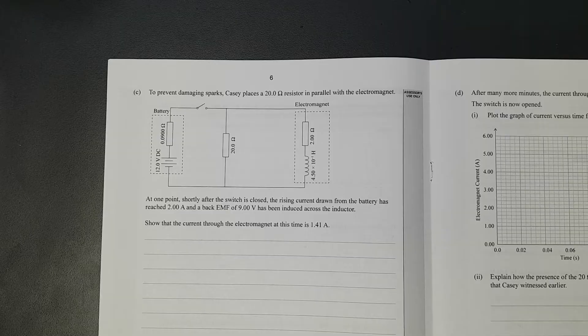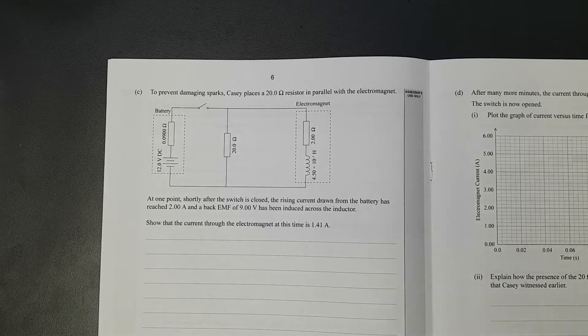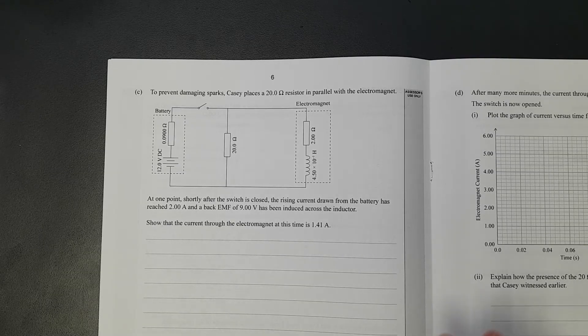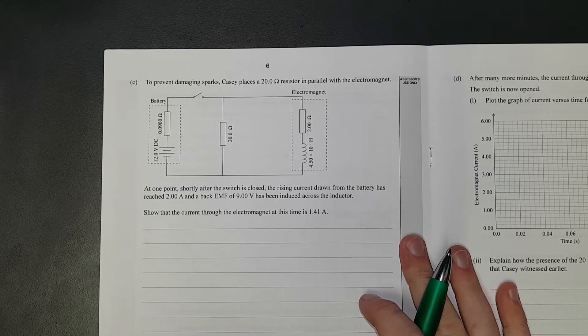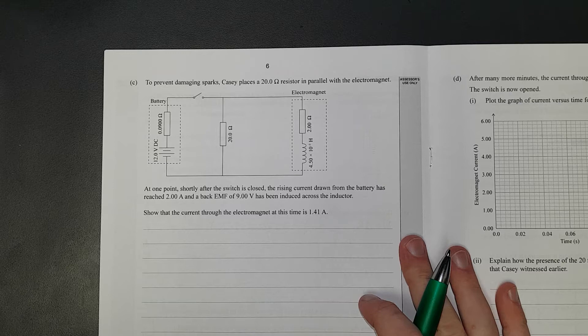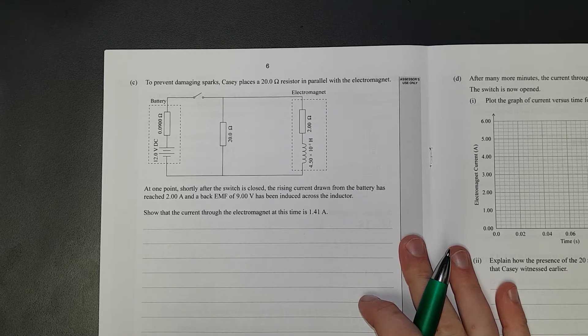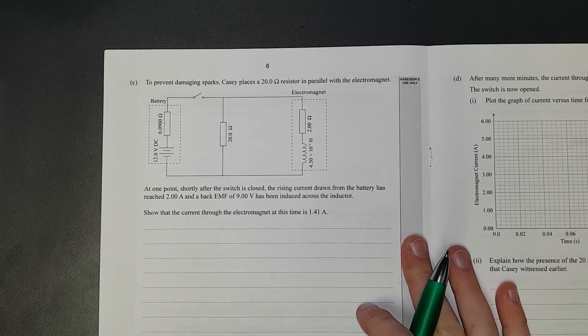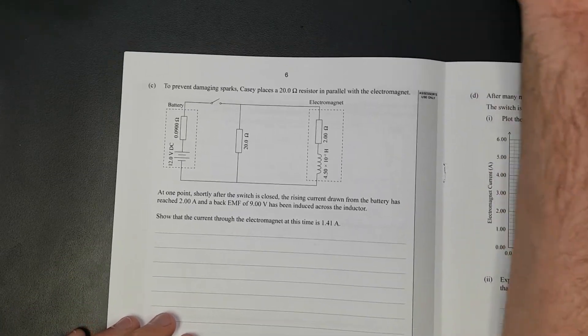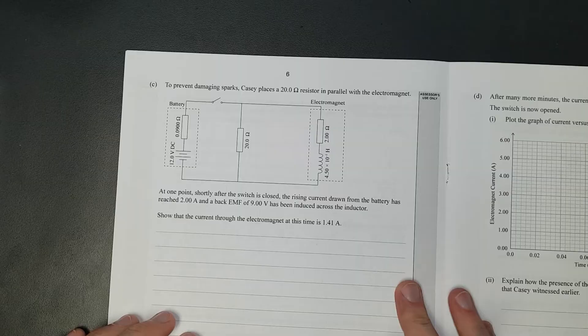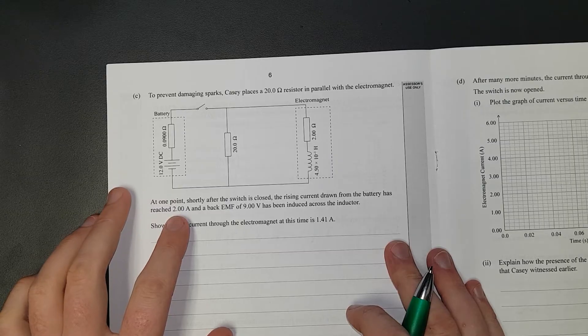To prevent damaging sparks, Casey places a 20-ohm resistor in parallel with the electromagnet. At one point, shortly after the switch is closed, a rising current drawn from the battery has reached two amps. A back EMF of nine volts has been induced across the inductor. Show that the current through the electromagnet at this time is 1.41 amps. Man, this is a doozy of a question. Mostly because it means you're going to have to put a whole lot of stuff down to show that you know what you're doing.